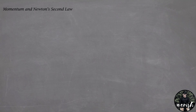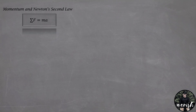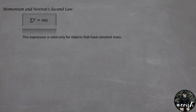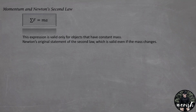From one of our previous lecture videos, we introduced Newton's second law and we have the mathematical equation for this law. The net force is equal to mass times the acceleration. We mentioned at the time that this expression is valid only for objects that have constant mass. Newton's original statement of the second law, which is valid even if the mass changes, states that the net force acting on an object is equal to the rate of change of its momentum, with this mathematical equation.